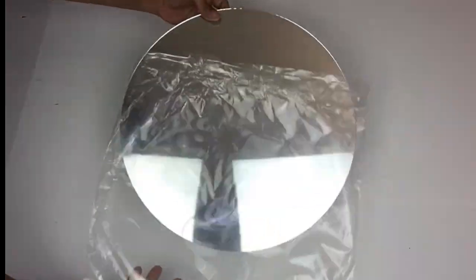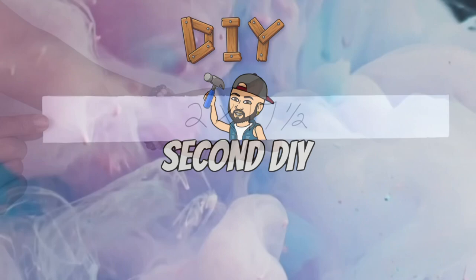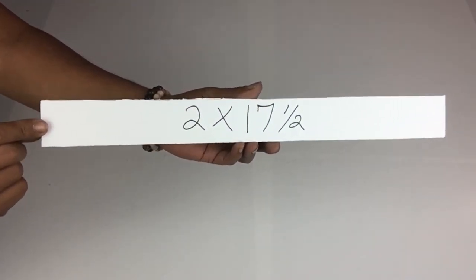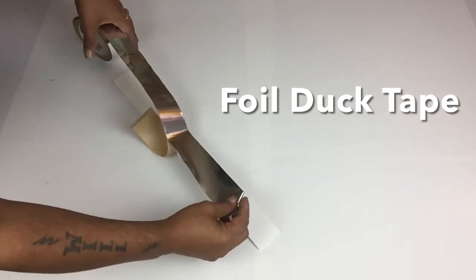For my second DIY I'll be creating the wall mirror decor, and I'll start off with a foam board that I cut two by 17 and a half. Next I covered both sides with foil duct tape.